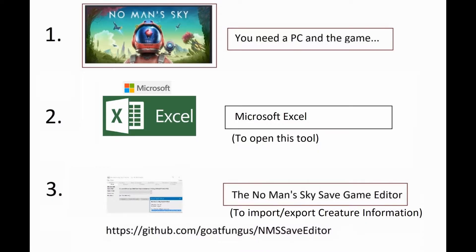So what do you need to use this tool? You obviously need the latest version of No Man's Sky. This tutorial is geared for PC users. The tool is a Microsoft Excel macro-enabled workbook, so you'll need Microsoft Excel — designed for the latest version with Office 365, though it might work on earlier versions. You will also need the No Man's Sky Save Game Editor by Goat Fungus, which allows us to import and export the pet section of your save files.